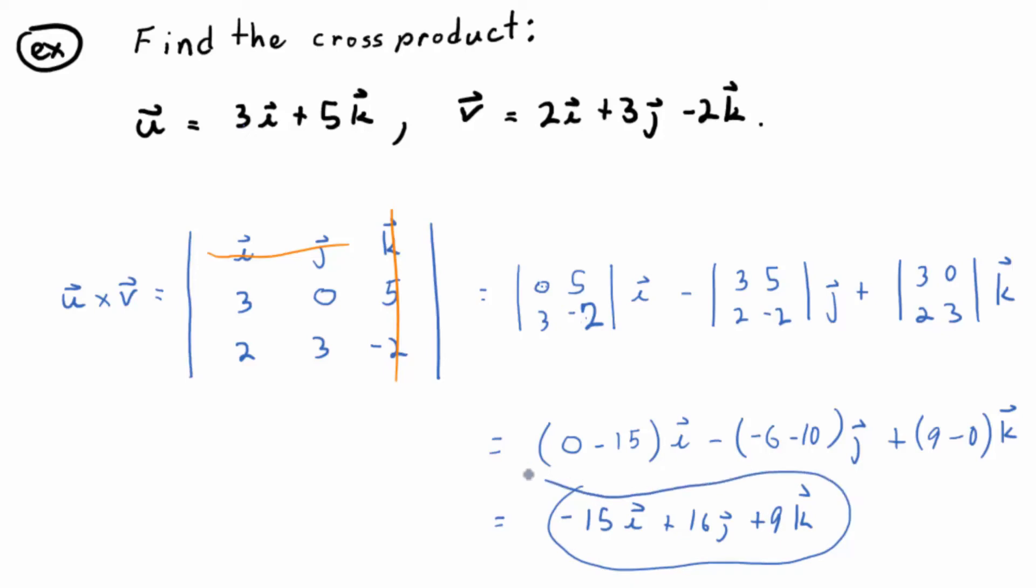So, what's special about the cross product, those of you taking physics? Well, one thing that's very special about it is that thing that we just computed is going to be orthogonal to both vectors we started with. This vector will be perpendicular to both U and V. How could you prove that it's perpendicular? Let's just do one of them. Let's prove that it's perpendicular to V.